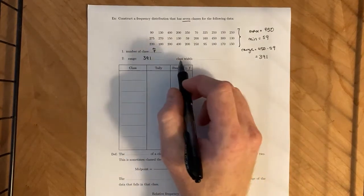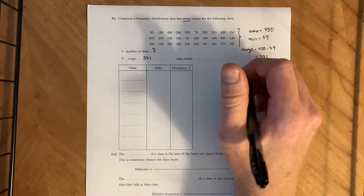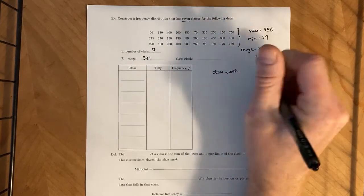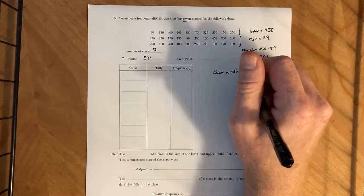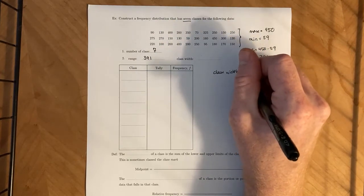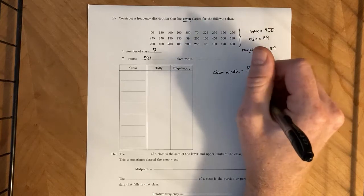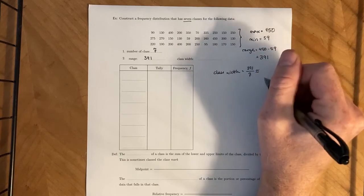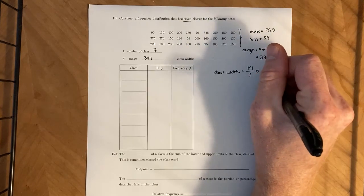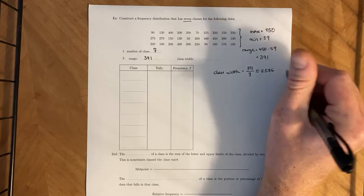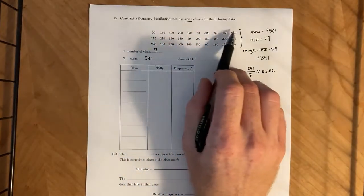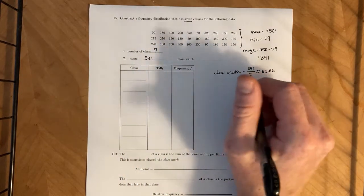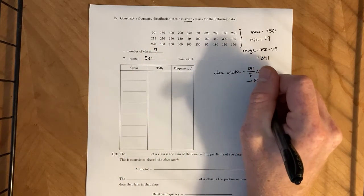Next, we need to establish the class width. So for the class width, we take our 391 and divide it by the number of classes that we want, seven. And if you throw that into a calculator, that gives us roughly 55.86. And now, looking at our numbers in our data set, they're all whole numbers. And so what we'll do is we'll take our class width to be 56.